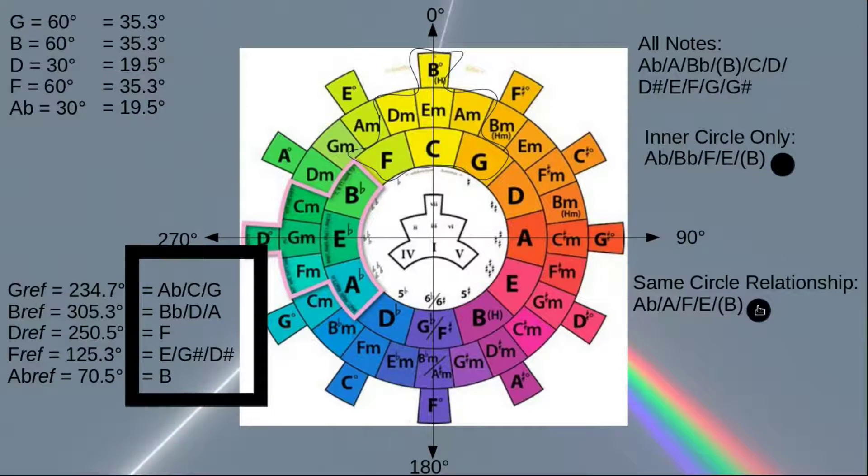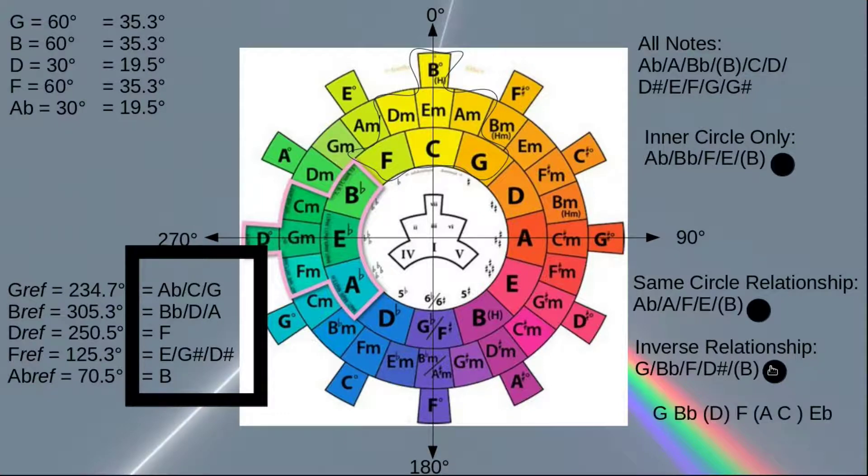And if we use an inverse relationship, meaning that the outer ring becomes the inner ring and vice versa, then we get G, B-flat, F, and D-sharp, which I guess is kind of like a G minor thirteenth chord that's missing some notes.